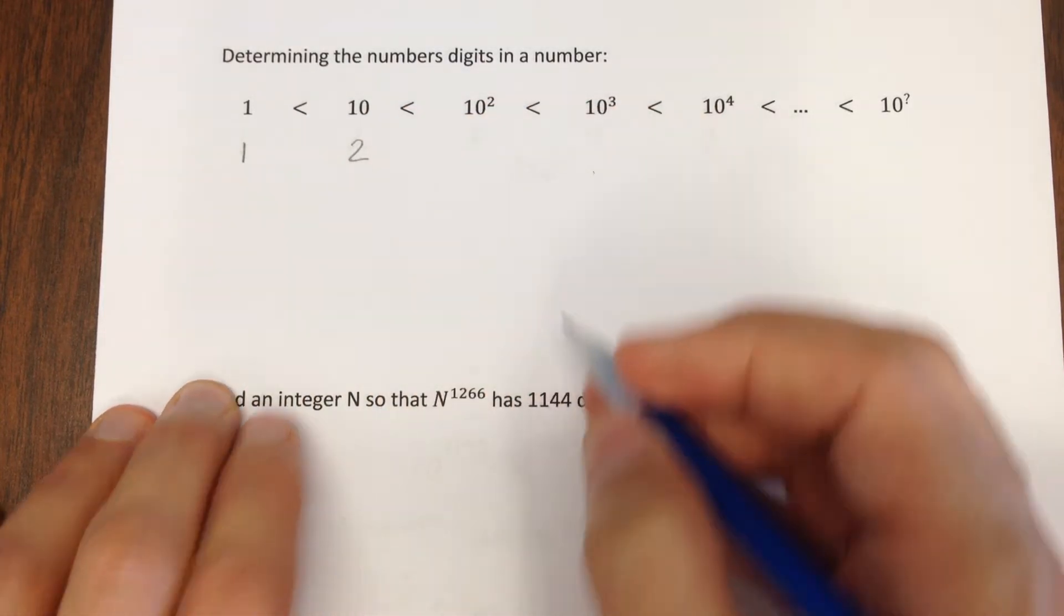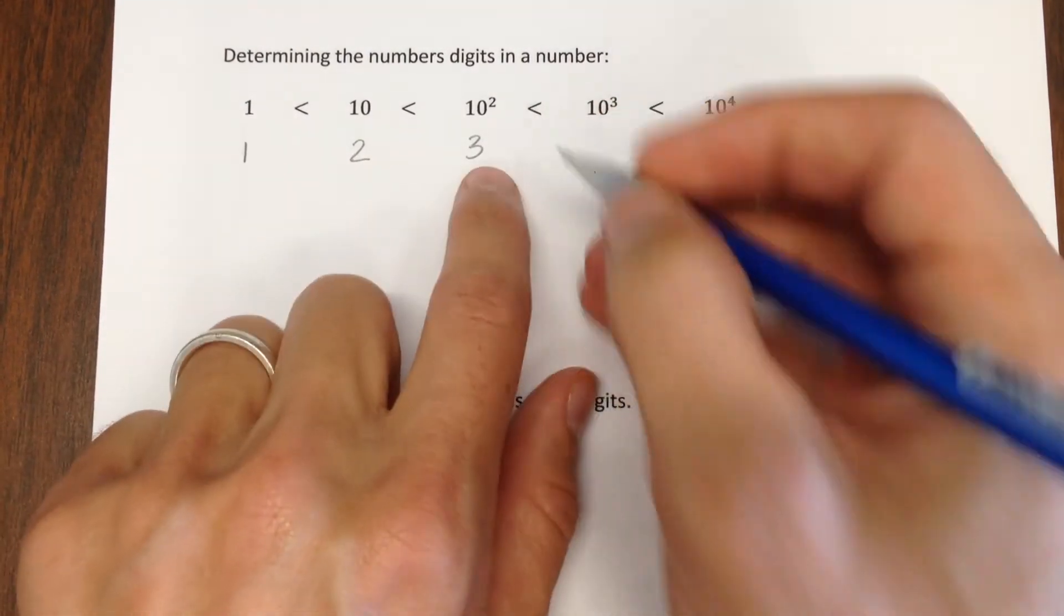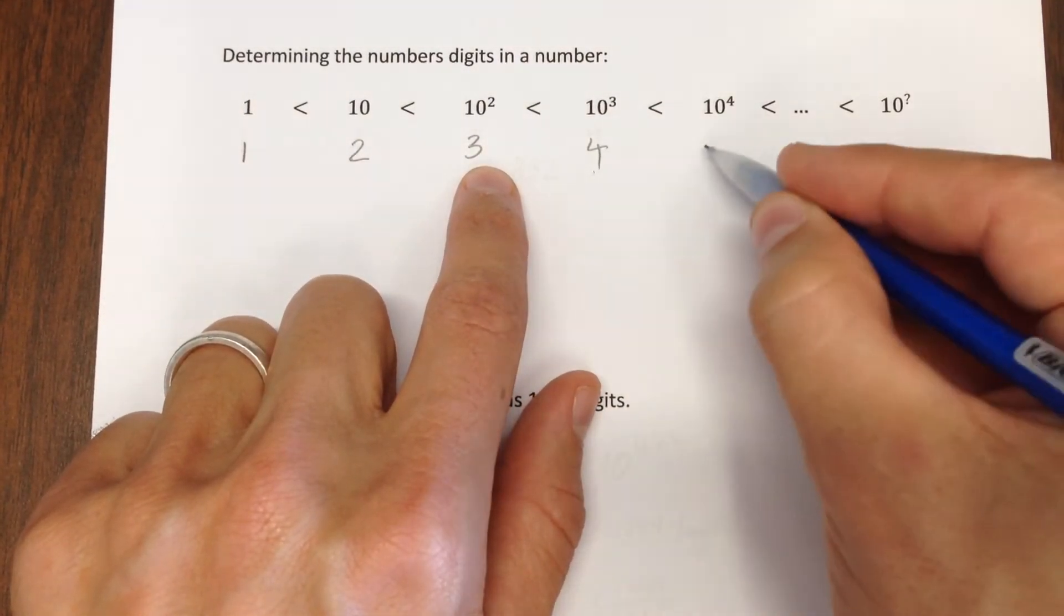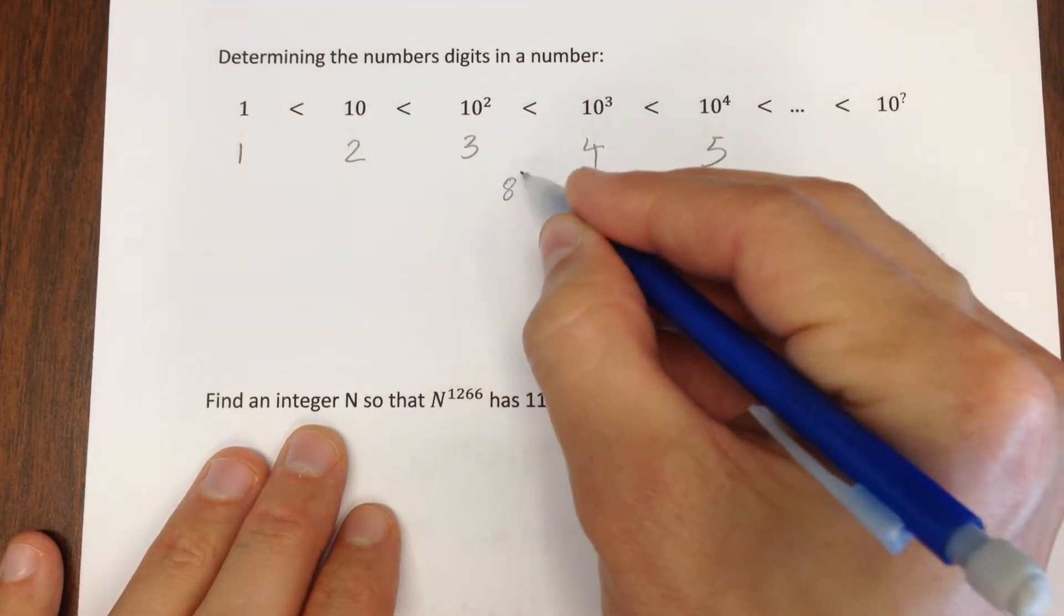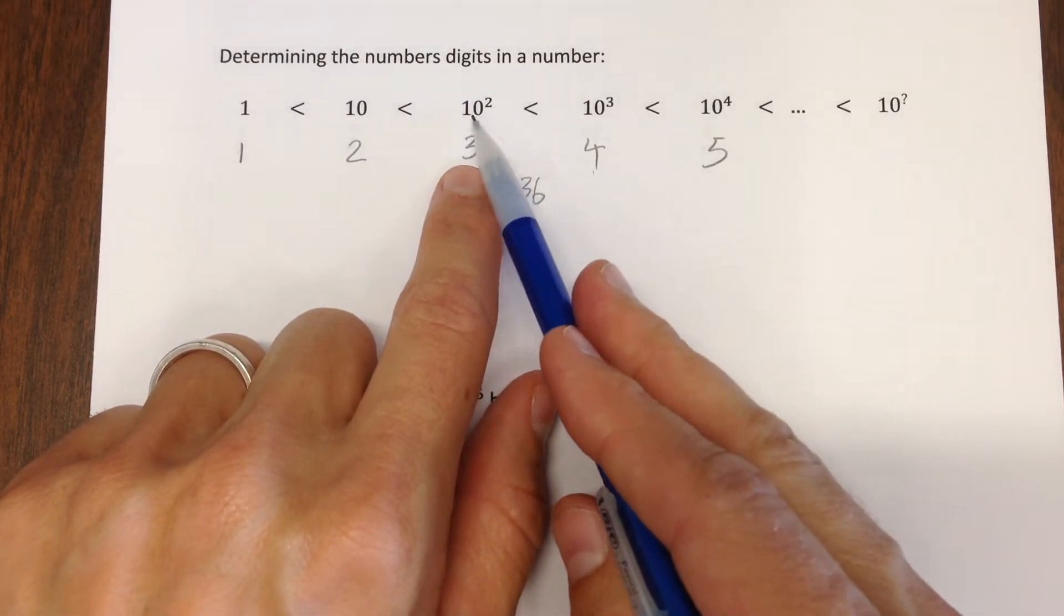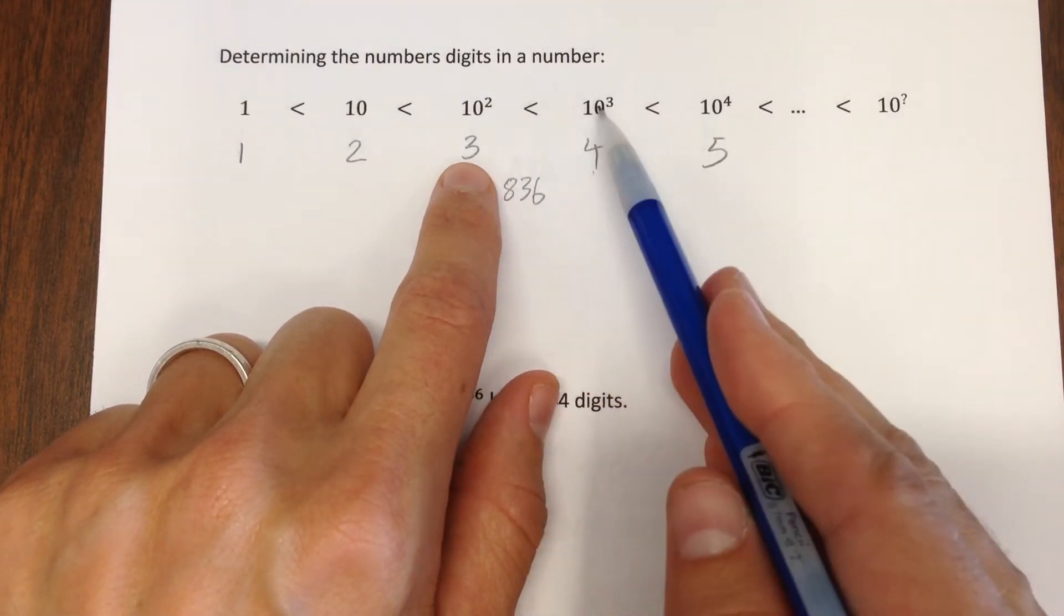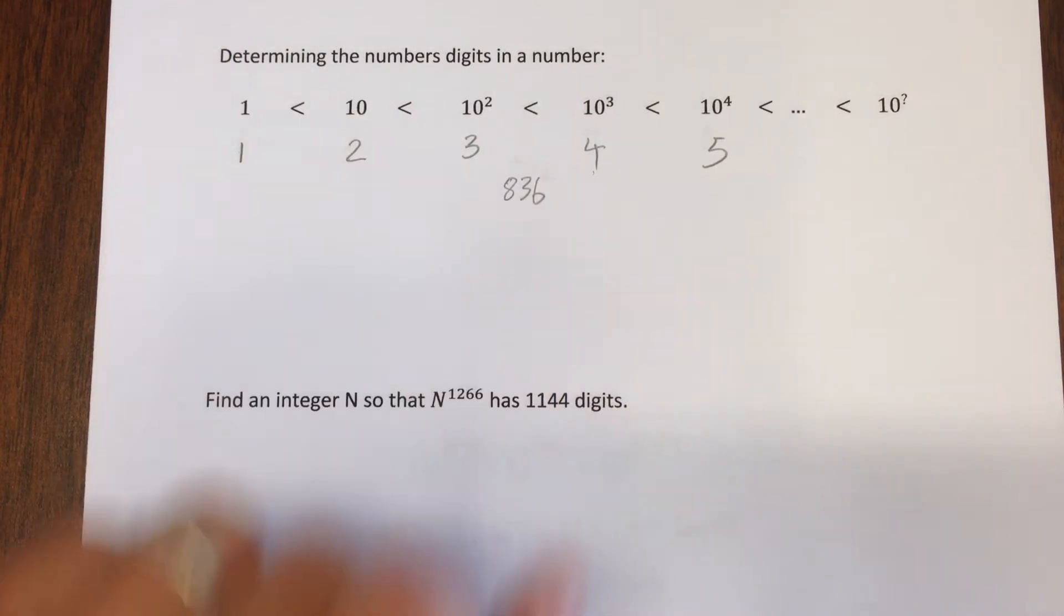10 is the smallest integer that has two digits, 10 squared is the smallest integer that has three digits, four digits, five digits, right? So if you run into a number like 836, because it falls between 10 squared and 10 to the third, you know that it has three digits, right?